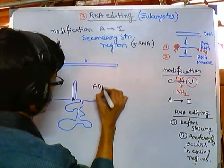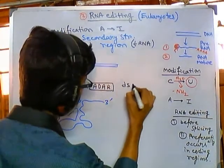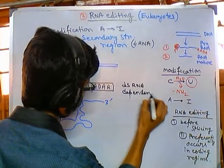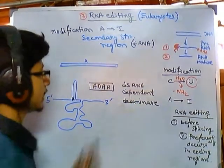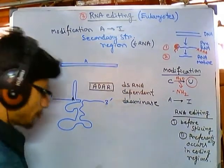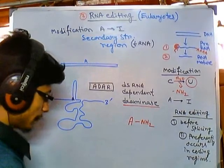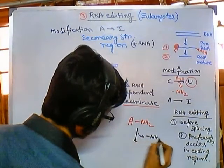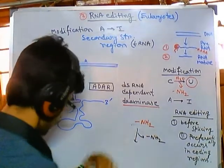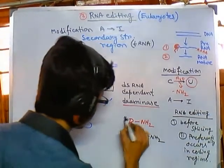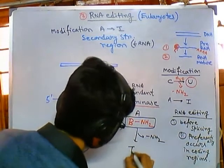In this situation, when you need to modify A to I, a set of proteins called ADAR will come in. ADAR is an abbreviation — the full name is dsRNA-dependent deaminase. It is simply a deaminase, meaning if adenine has an amino group (NH2) attached to it and we cleave that amino group away, what we get is inosine. So removal of the NH2 from the base structure of adenine yields inosine.